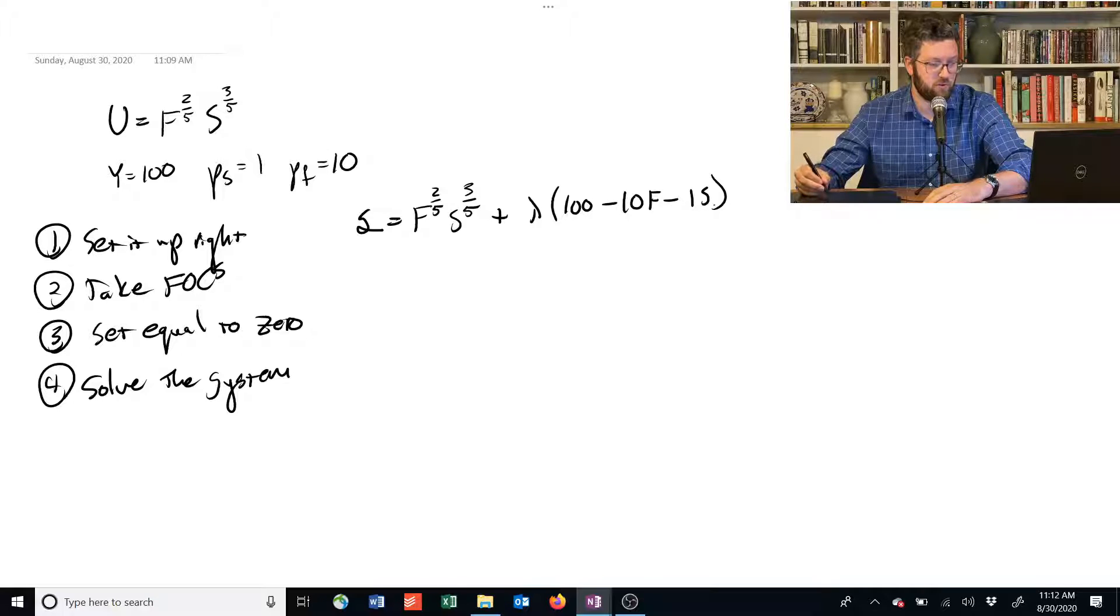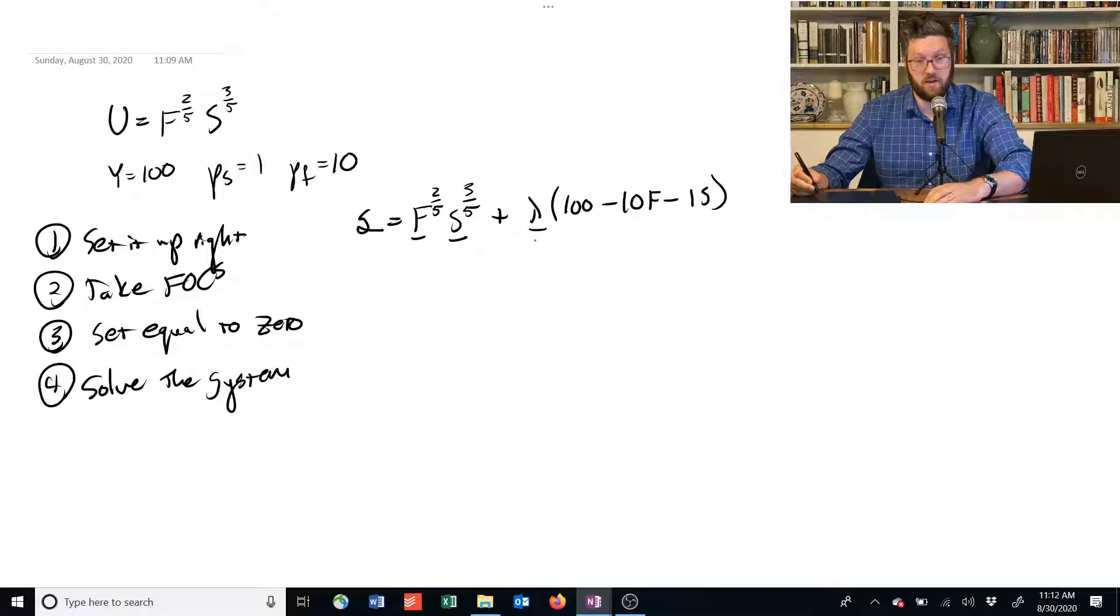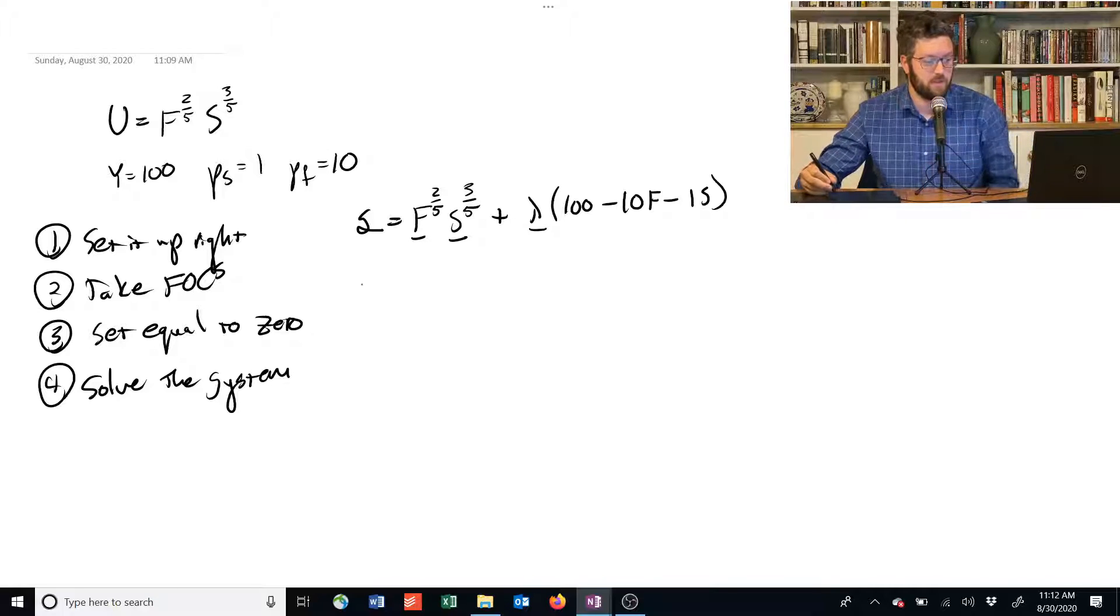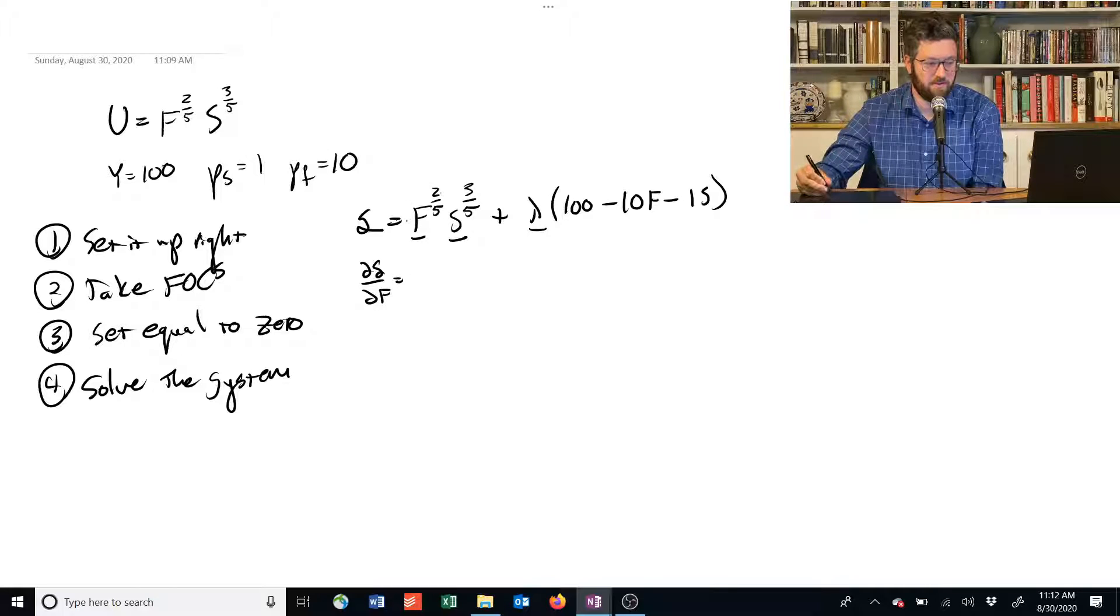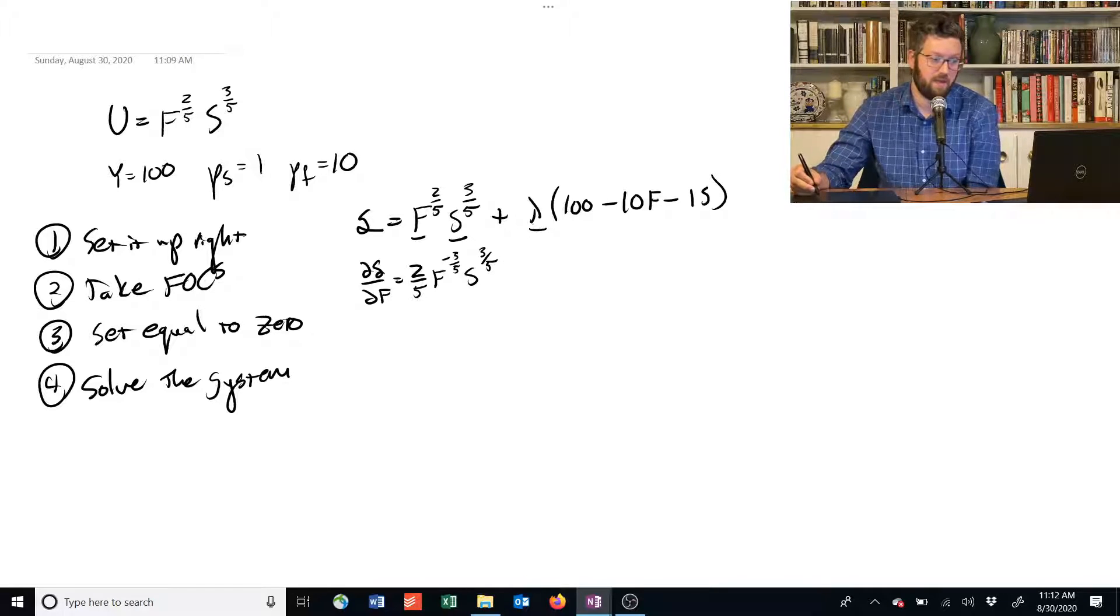Step two is to take the appropriate first-order conditions. So what are our choices? Food, shelter, and we also have to take a derivative with respect to the Lagrange multiplier. So let's do that. The derivative with respect to F, we have two-fifths as an exponent on F, so we've got to bring that out front. Two-fifths times F. We subtract off 1. We get negative three-fifths times S to the three-fifths. We're not done, though. F also appears here. 10 times F, negative 10. And we've got a Lagrange multiplier outside, so that's negative 10 times the Lagrange multiplier.